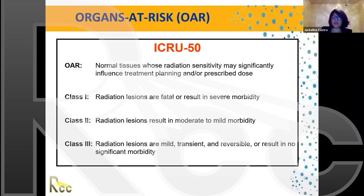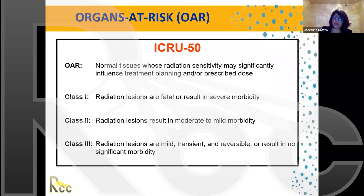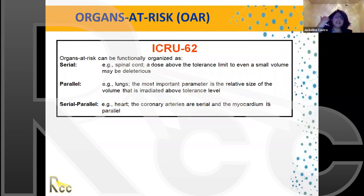ICRU 50's OAR classification into Class 1, 2, and 3 is no longer current. We now follow ICRU 62, which classifies organs as serial, parallel, or serial-parallel structures — a distinction that is one of the most important things we pay attention to in planning.